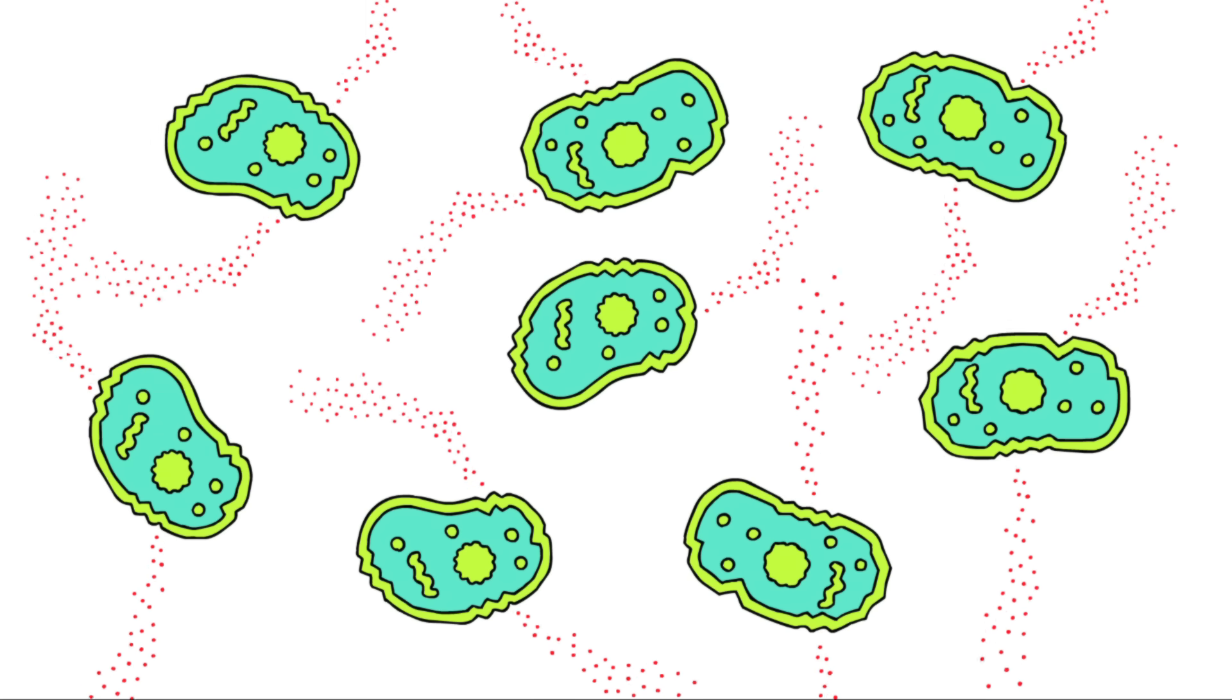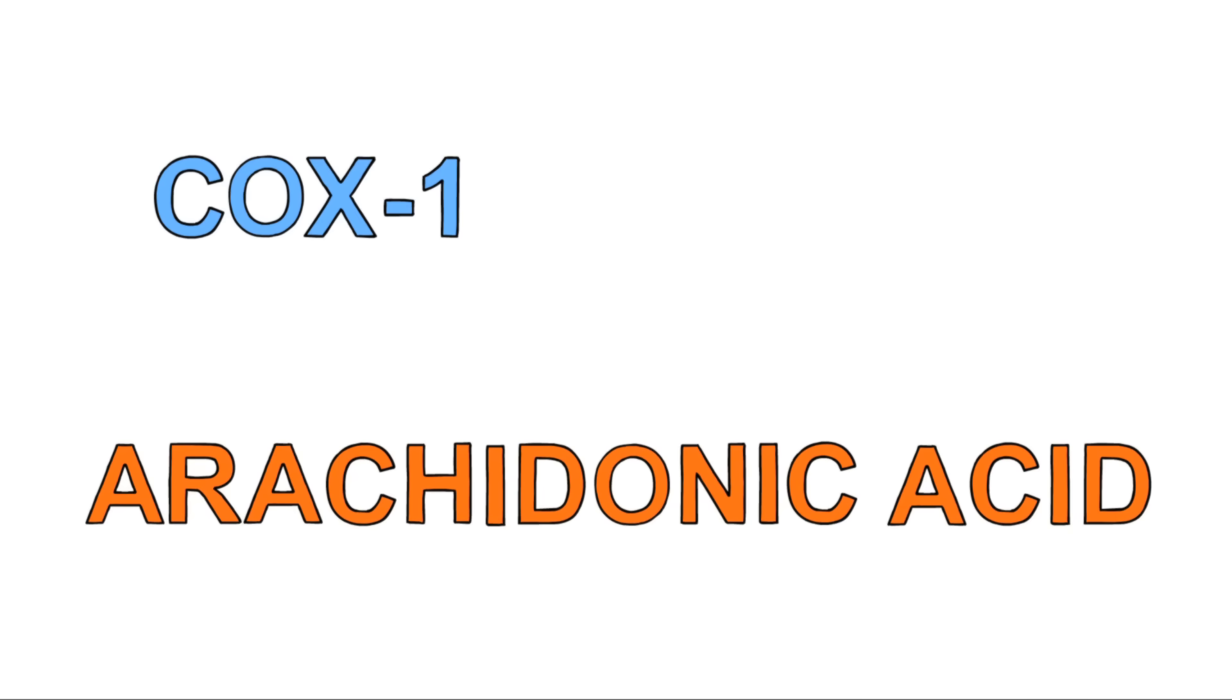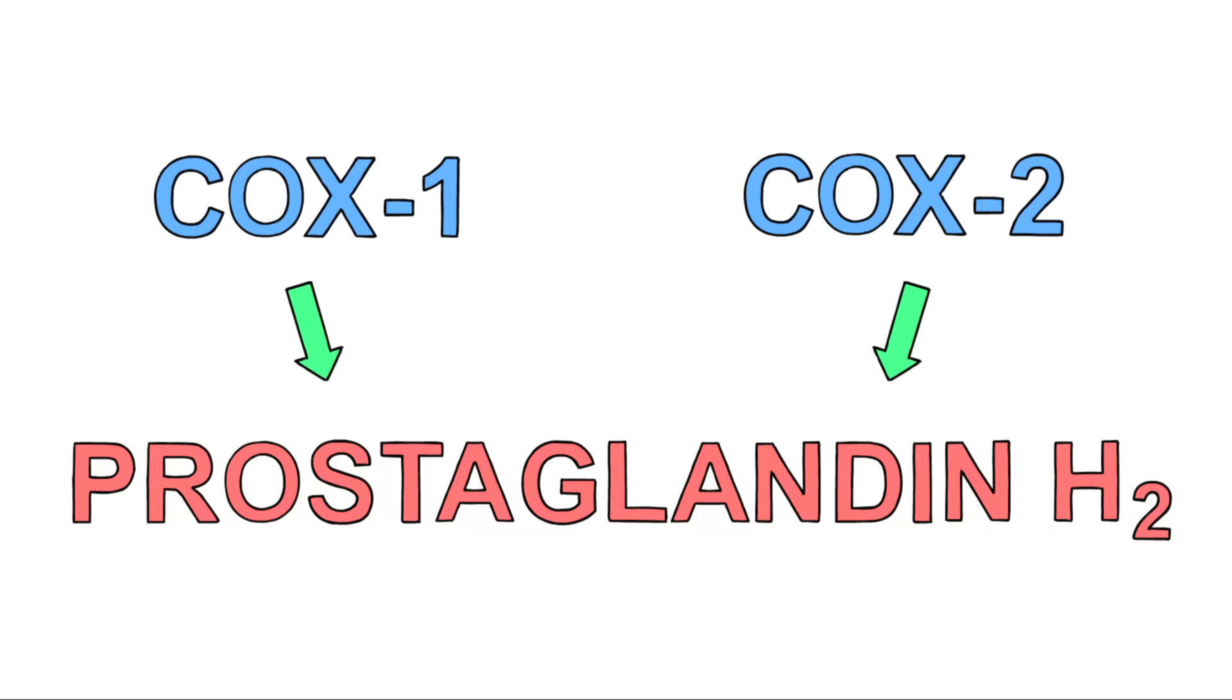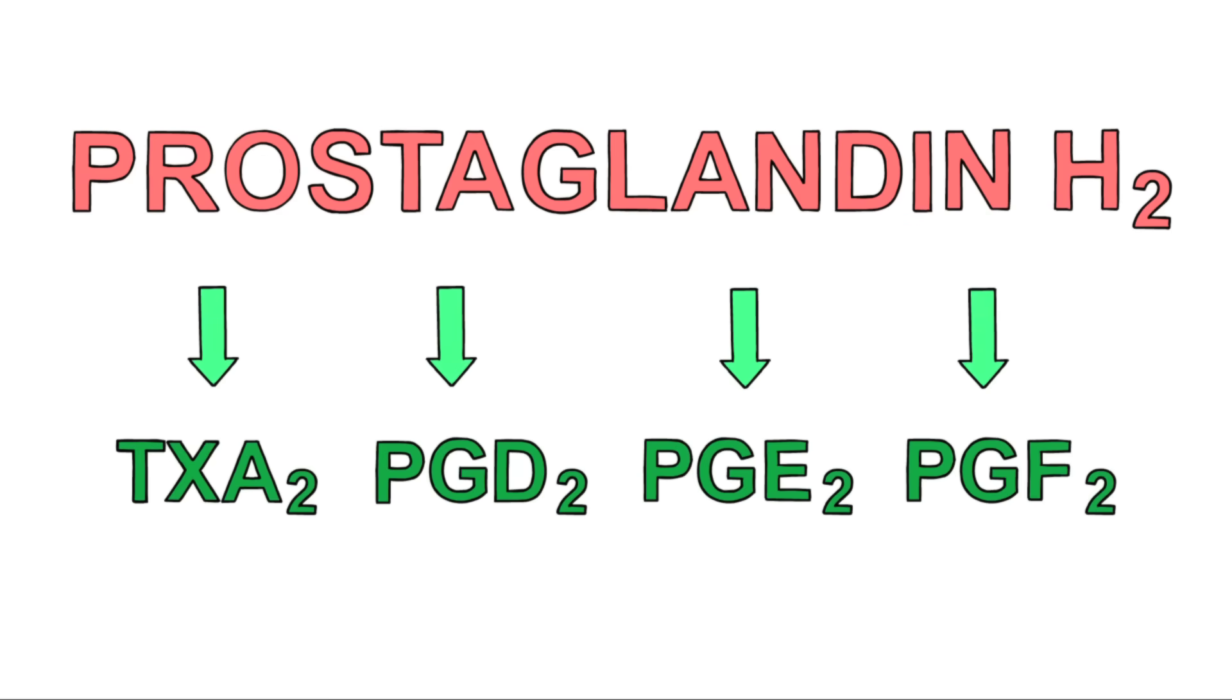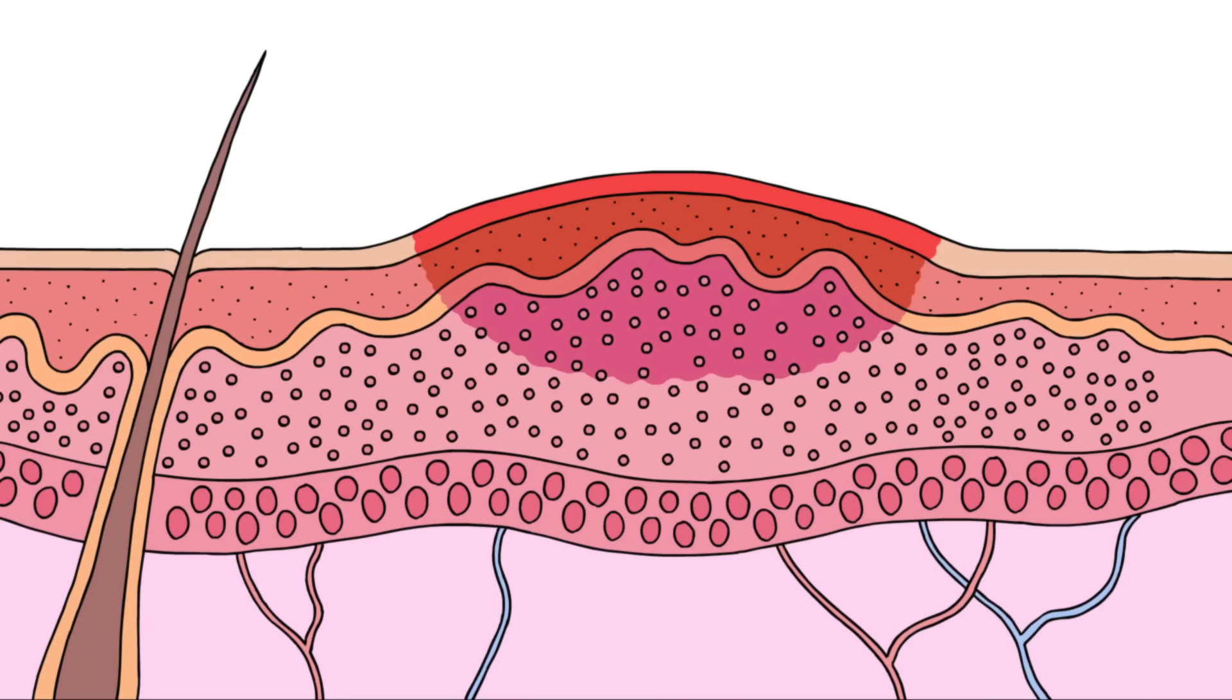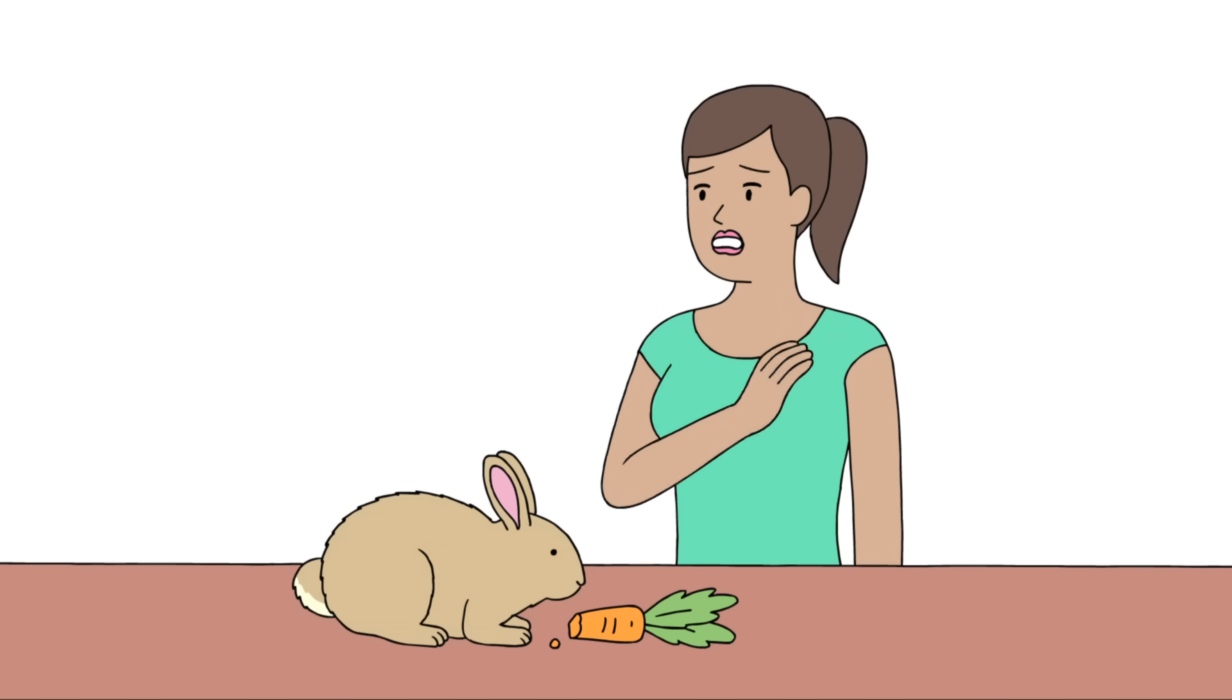When cells are damaged, they release a chemical called arachidonic acid. Now, two enzymes, called COX-1 and COX-2, convert this arachidonic acid into prostaglandin H2, which is then converted into a bunch of other chemicals that do a bunch of things, including raise your body temperature, cause inflammation, and lower the pain threshold.